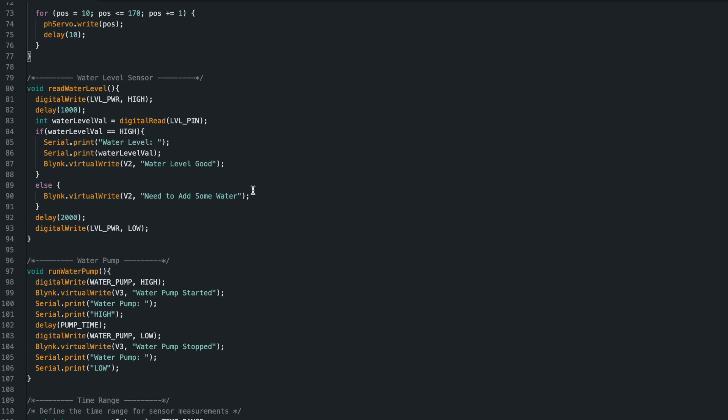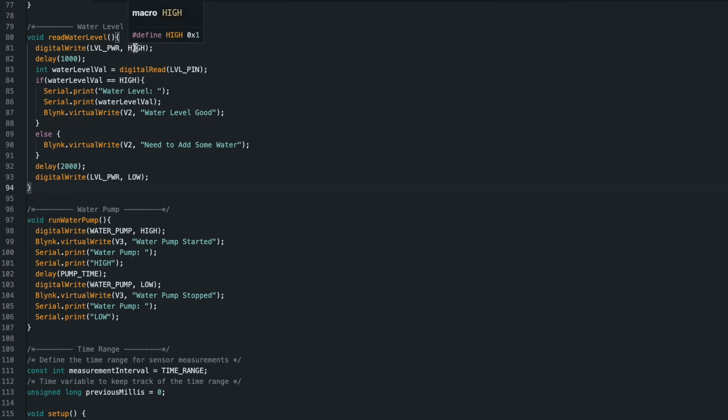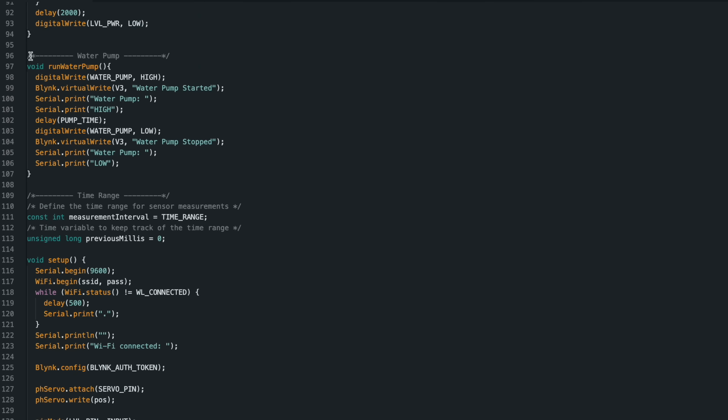Then, the code block for the water level sensor was added. The values to be sent to blink were defined. Then, the function to run the water pump was added, and again the values to be sent to blink were defined here.